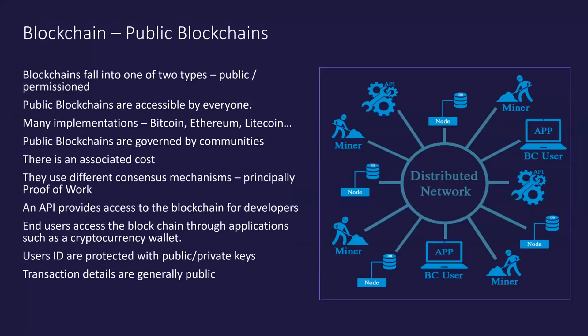Let's look at some of the more recognisable blockchain platforms. First is a public blockchain — as the name suggests, it's a permissionless blockchain where anybody can effectively join, meaning they can read, write, or participate. There is an associated cost, done generally by transaction. To engage with the public blockchain you simply use a publicly available API, which developers use to integrate into a blockchain architecture of this type. User IDs are protected and managed through public-private key. This is probably the most widely used right now, supporting Bitcoin and the Ethereum open-source network.